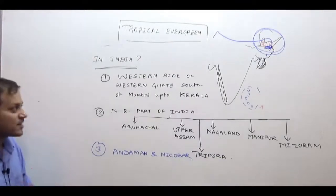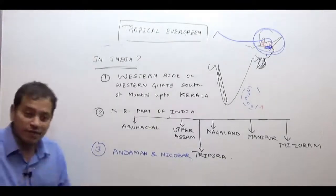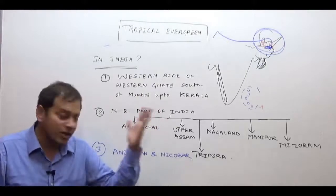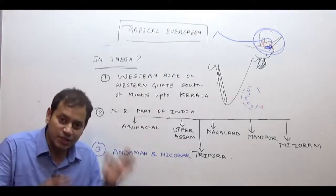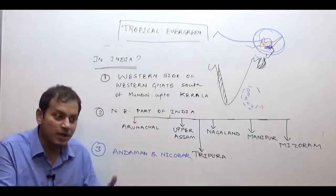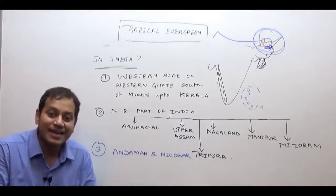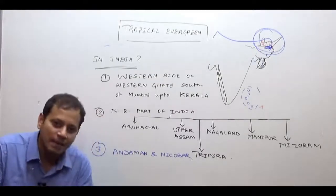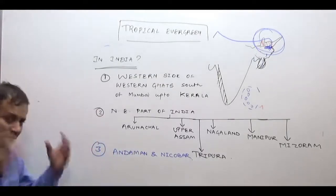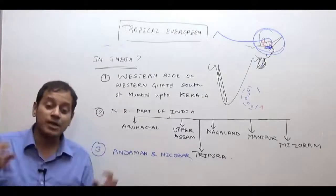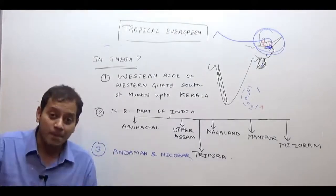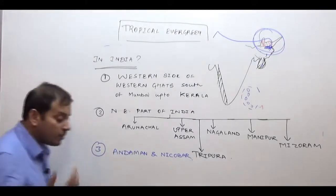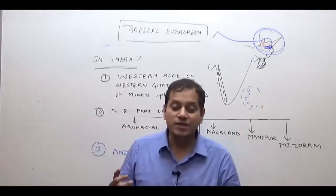This is the region of very heavy rainfall, which is why these forests grow here. As you study natural vegetation, open the NCERT annual rainfall map alongside and you will be able to remember the distribution better. Now, what about the important species of this region?